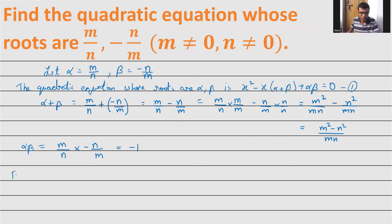Put what you got from equation one: we get x² minus x times alpha plus beta, which is (m² - n²)/mn, plus alpha beta, which is -1, equals zero.